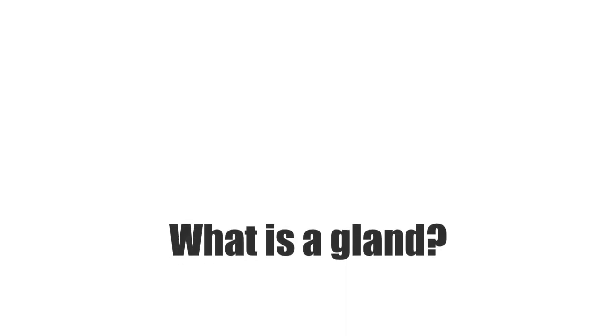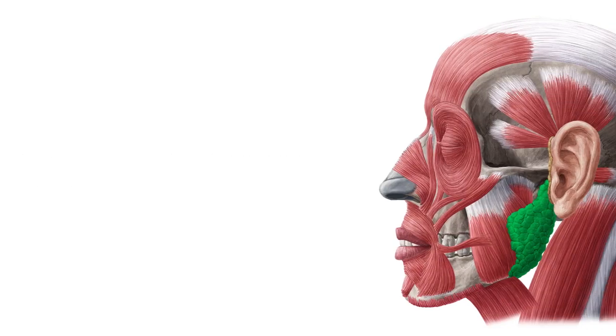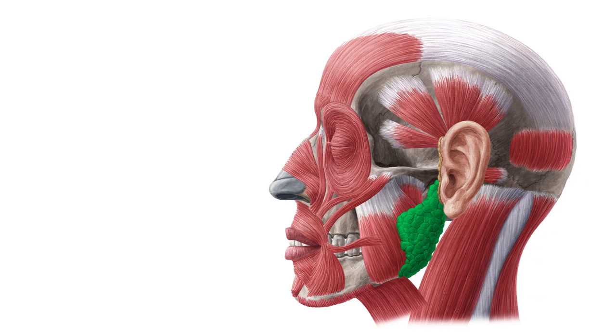Hello again everyone, it's Matt from KenHub. Have you ever wondered what a gland is? Well, on this tutorial, I will answer that question. Glands are organs that secrete substances into the body for use or discharge, and function as part of either the endocrine system or the exocrine system.